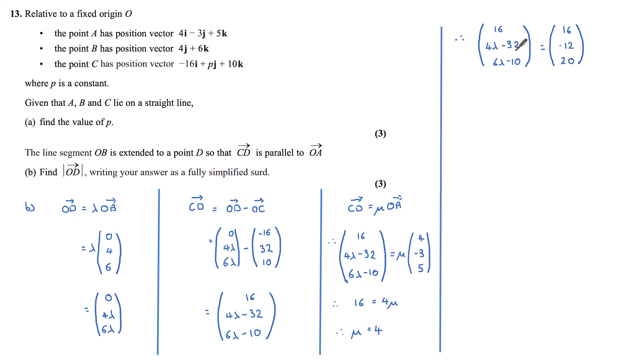Now I can set my j components equal to each other to solve for lambda. So 4λ minus 32 equals -12. Adding 32 to both sides gives me 4λ equals 20. Dividing both sides by 4 gives me lambda equals 5. Now I can check this lambda version works with my k components. Does 6 times 5 minus 10 equal 20? Well, by checking, 6 times 5 is 30 minus 10 does indeed equal 20. So this lambda value of 5 works.